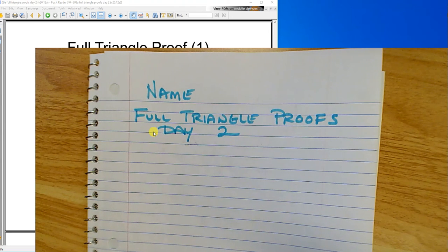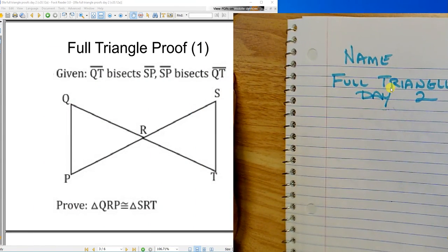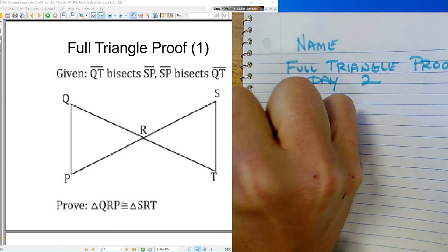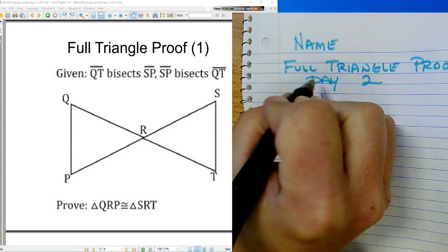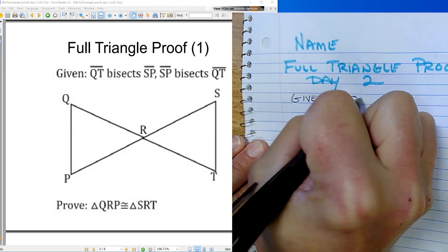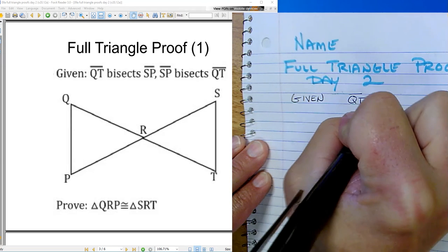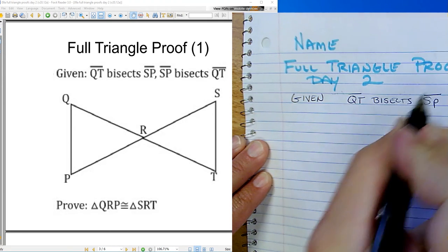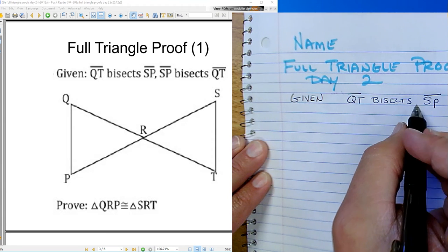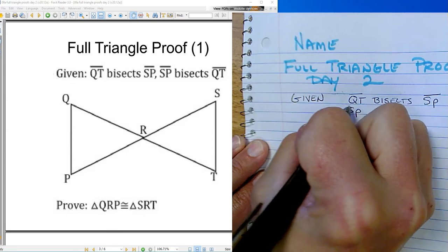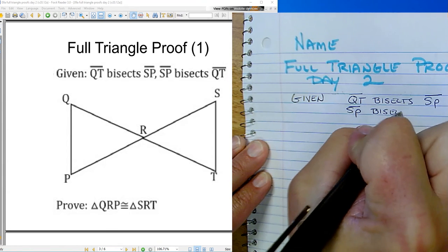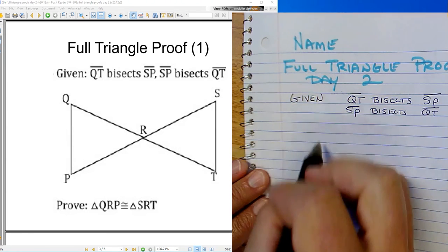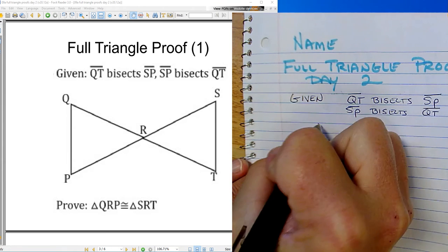And just like the last lesson, you're expected to write things down. So let's get all those givens in here and the picture. So I was given that QT bisects SP and SP bisects QT. So let's draw the picture of this, kind of like a big bow tie.